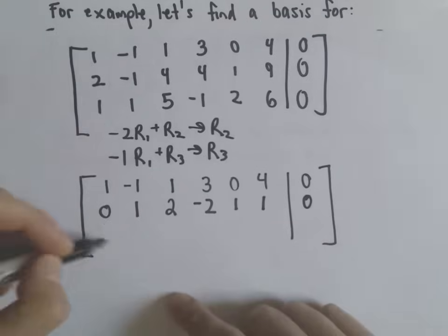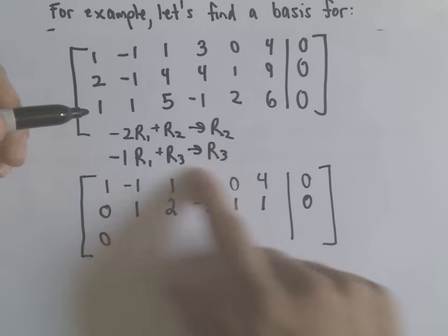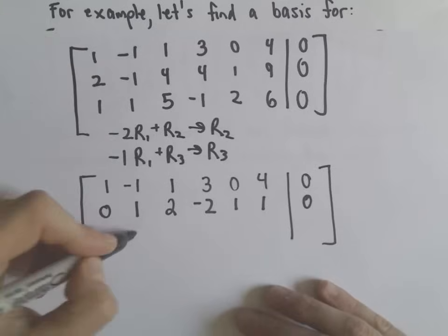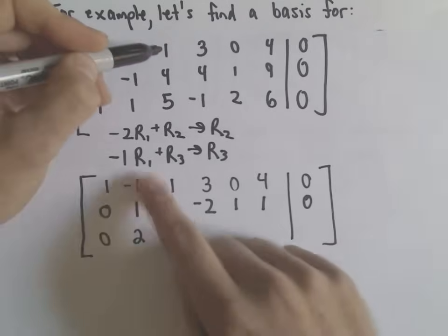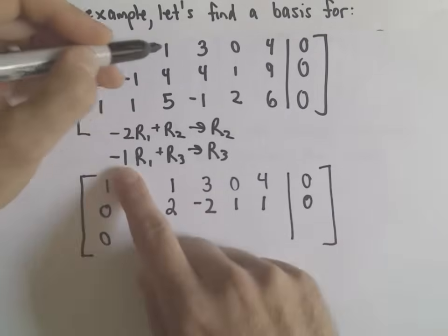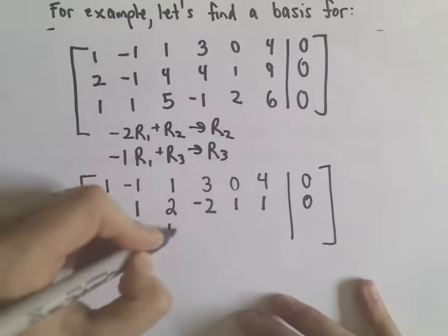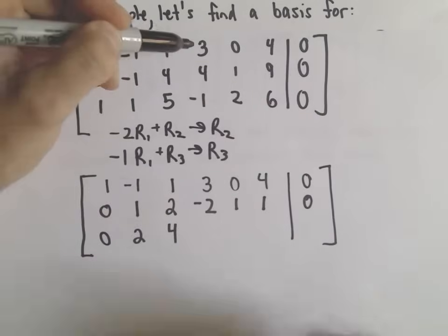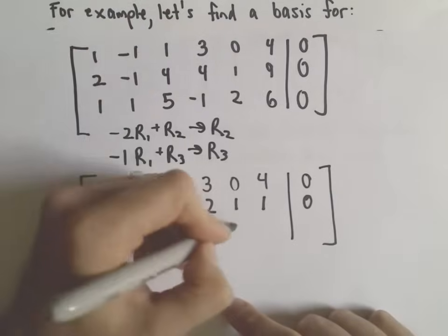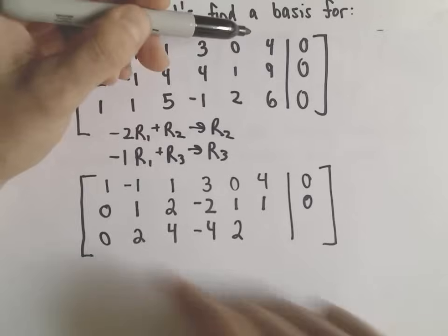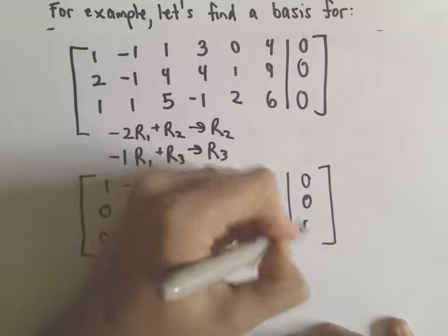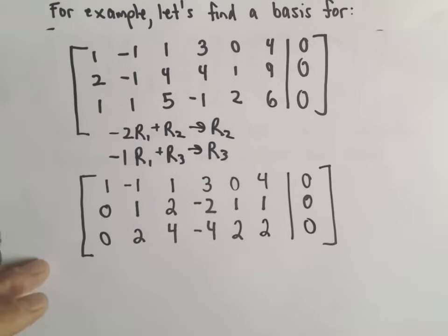Then we have negative 1 plus 1, which is 0 when we do our last row operation. We'll have positive 1 plus 1, which will give us 2. We'll have negative 1 plus 5, which will give us 4. We've got negative 3 plus negative 1, that'll give us negative 4. We'll have 0 plus 2, which is 2. We'll have negative 4 plus 6, so that's positive 2. And then we'll have a 0.